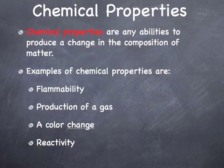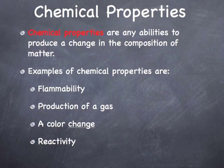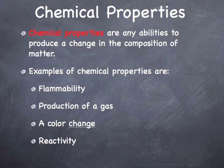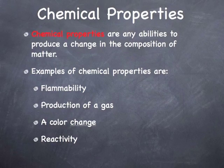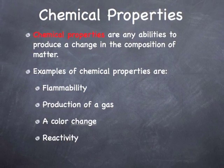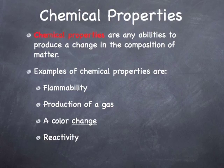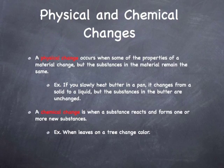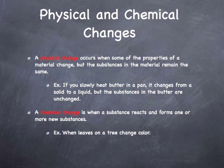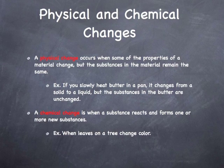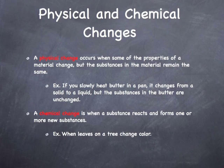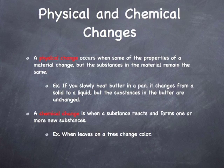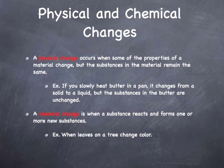Chemical properties are any abilities to produce a change in the composition of matter. Examples are flammability, production of a gas, a color change, and reactivity. A physical change occurs when some of the properties of a material change, but the substances in the material remain the same. A chemical change is when a substance reacts and forms one or more new substances.